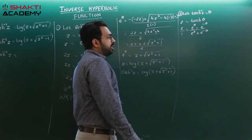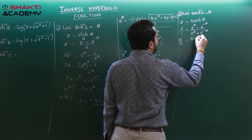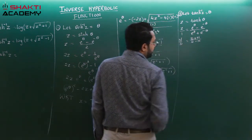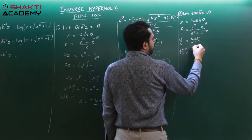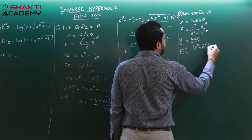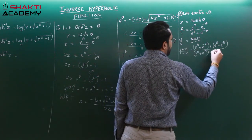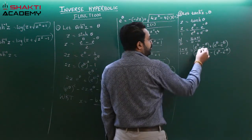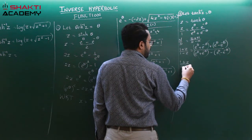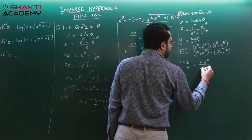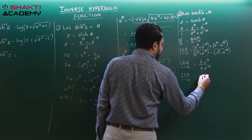Writing z as z/1 and applying componendo-dividendo: (1 + z)/(1 - z) equals (denominator + numerator)/(denominator - numerator), which gives (e^theta + e^(-theta) + e^theta - e^(-theta)) divided by (e^theta + e^(-theta) - e^theta + e^(-theta)). The e^(-theta) terms cancel in the numerator, and e^theta terms cancel in the denominator. So (1+z)/(1-z) = 2e^theta / 2e^(-theta), and the 2s cancel, giving (1+z)/(1-z) = e^(2theta).